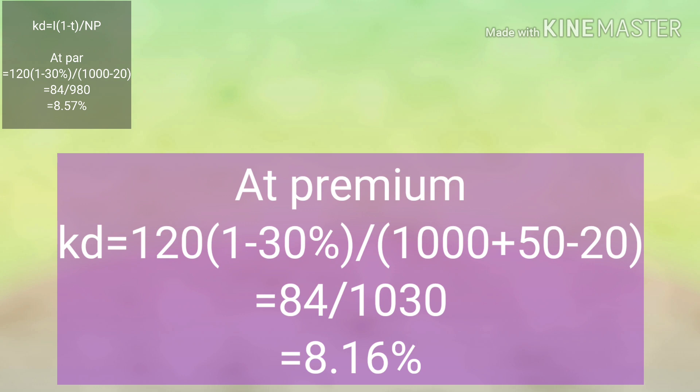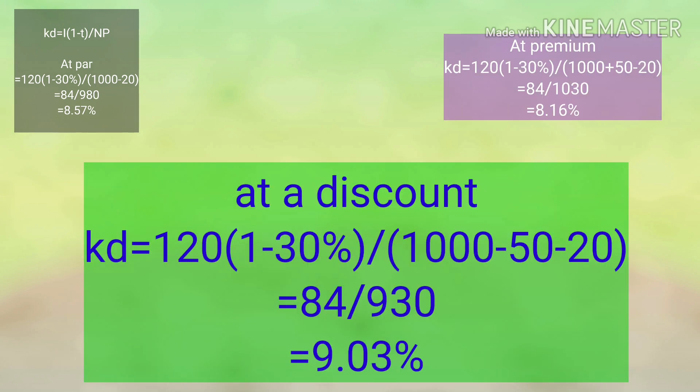If issued at a premium, only the net proceeds change; interest and tax rate remain the same. Net proceeds = 1000 + 50 (premium) − 20 (flotation) = 1030. Cost = 84 / 1030 = 8.16%. If issued at a discount: Np = 1000 − 50 (discount) − 20 (flotation) = 930. Cost = 84 / 930 = 9.03%.